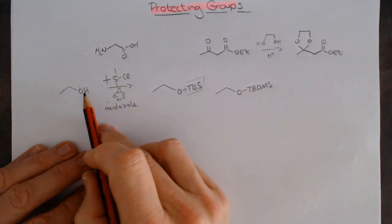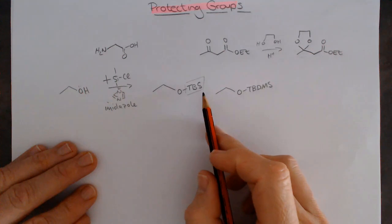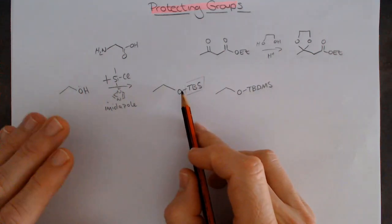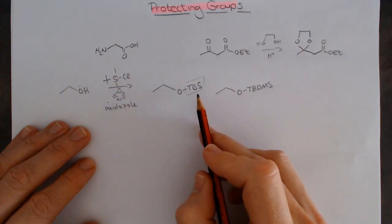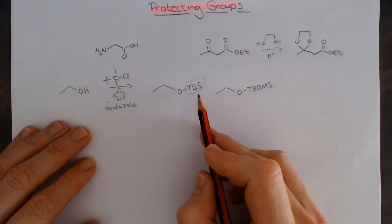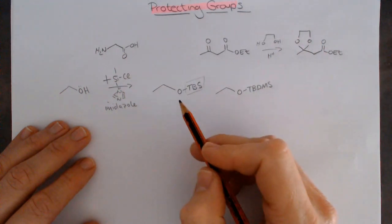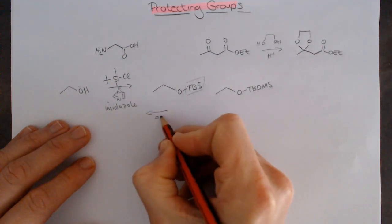The silyl groups are very easy to put on. To take them off, they are relatively stable to base because of the steric hindrance. They are acid labile, similar to the acetals. So we can remove them with acid.